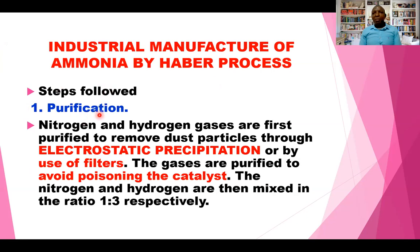Step number one is purification. The nitrogen and hydrogen gases are first purified to remove dust particles through electrostatic precipitation or by use of filters. Electrostatic precipitation is whereby the gases are passed through electrically charged rubber sheets, which removes impurities like dust particles. The gases are purified to avoid poisoning the catalyst — if you are asked why you need to purify the gases, it is because impurities will poison the catalyst.